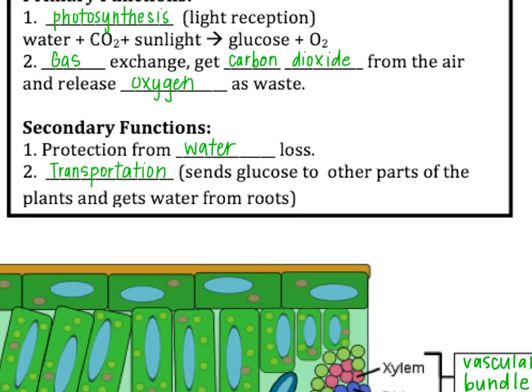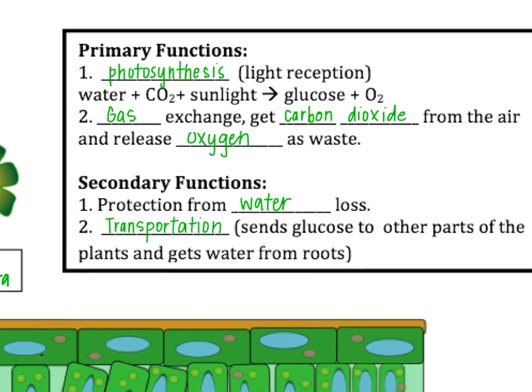Now for the leaves. The functions of the leaves are photosynthesis — which involves water and carbon dioxide that, when sunlight is added, change into glucose and oxygen. Oxygen is the waste product and glucose is the food for the plant. The other purpose of the leaves is gas exchange: they take in carbon dioxide from the air and release oxygen as waste, which is the oxygen that we breathe. That's why we say trees and plants produce oxygen. Leaves also protect from water loss and are responsible for transporting some glucose to other parts of the plant.